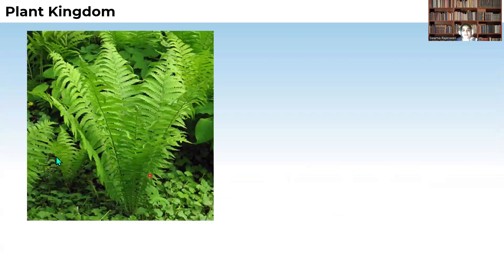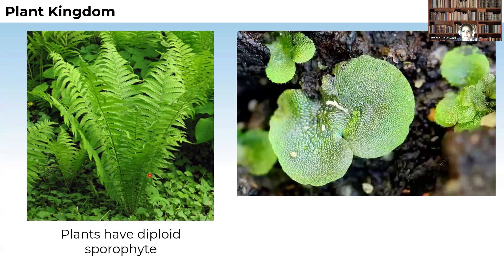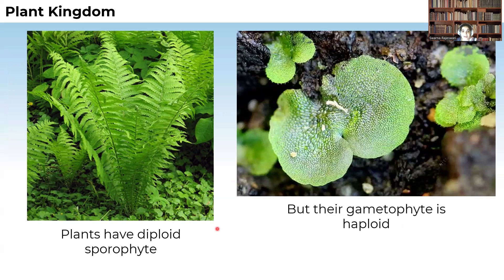When you see higher plants, they show two types of stages: sporophyte as well as gametophyte. The sporophytic stage is diploid in nature, whereas the gametophytic stage is haploid.